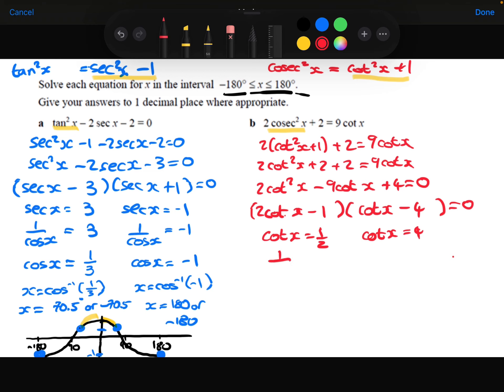Let's remember that cot is 1 over tan. So if we do the reciprocal of each of those, we find that tan x is equal to the reciprocal of 1 half, which is 2. Tan x is equal to the reciprocal of 4, which is a quarter.